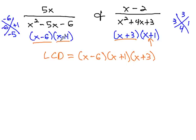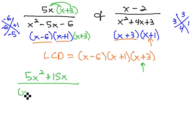The first fraction you see is missing the x plus 3, so we'll multiply by x plus 3 in the numerator and denominator. Distributing the 5x through gives us 5x squared plus 15x over the common denominator, x minus 6, x plus 1, x plus 3.